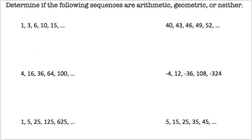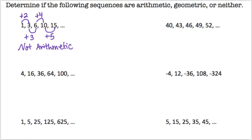Now we have to determine if the following sequences are arithmetic, geometric, or neither. For the first problem, the differences are plus 2, then plus 3, then plus 4, then plus 5 — they're all different, so it's not arithmetic. Then checking geometric: 3 divided by 1 is 3 and 6 divided by 3 is 2 — those don't match either, so it's neither.